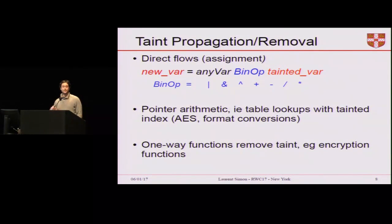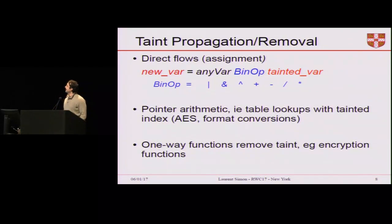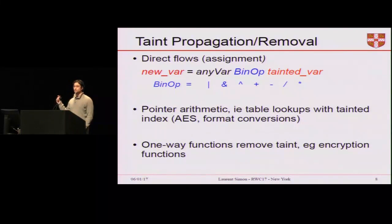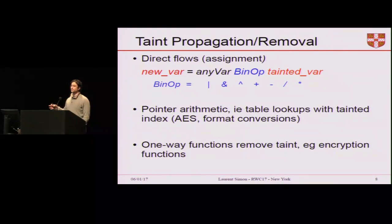As the program continues execution, we propagate the taint in two ways. First, during assignment: if a tainted variable is copied to a new variable, that new variable also becomes tainted. We also propagate taint based on pointer arithmetic operations — think of a table lookup where the table itself is not tainted but the index used for lookup is tainted. This is used a lot in format conversions, such as between binary format and base64. Because we're dealing with cryptography, we also need a way to untaint memory locations containing results of one-way functions, such as encryption or hash functions, so long as the input has high entropy.